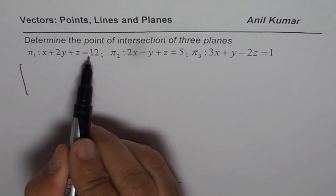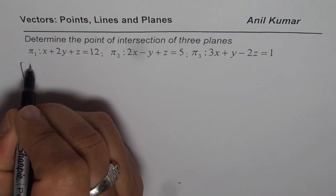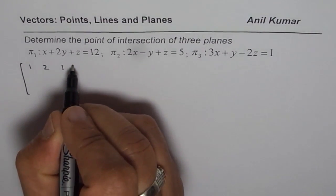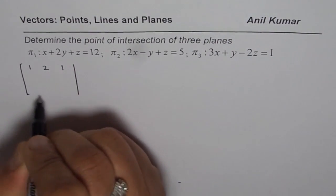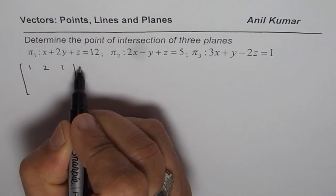We have the equation here. Coefficients for the first one is 1, 2 and 1. So we write 1, 2 and 1. First we write the coefficients. Then that is the coefficient kind of a matrix. And then we draw this line and write the values, which is 12.